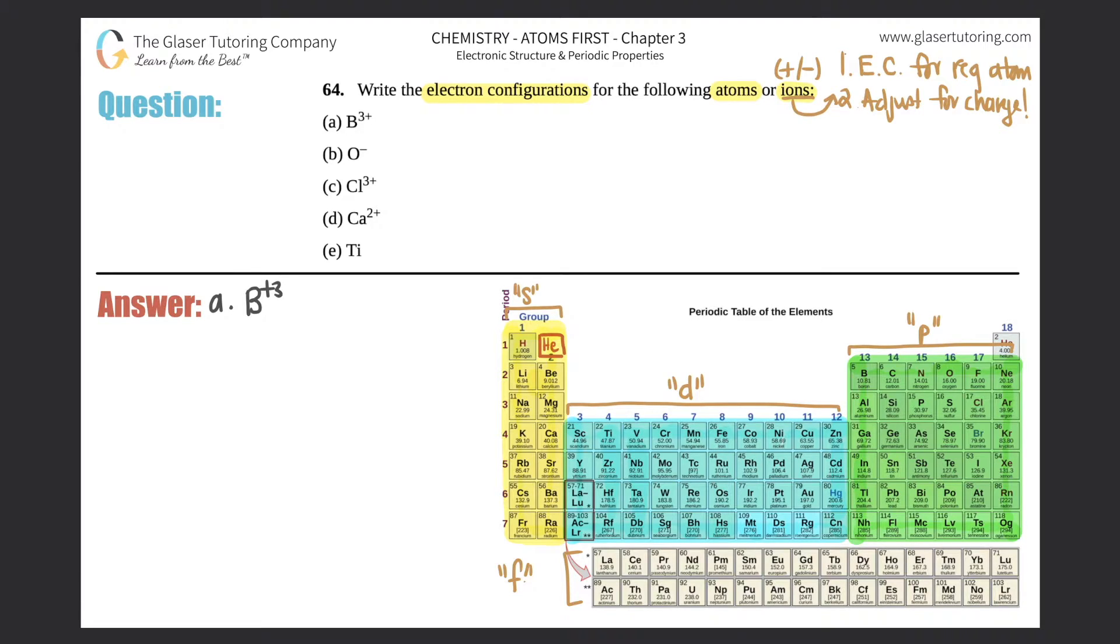Part a: B³⁺, which is boron plus three. Boron is right here. Always start in the beginning and follow the atomic number to get to where you want to go. Remember the s's start with one (1s), the p's start with two (2p), the d's start with three (3d), and then the f's start with four (4f), just as a guideline to help you.